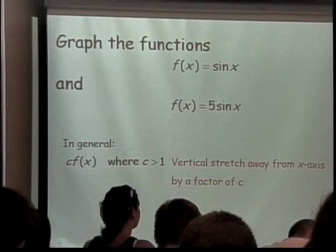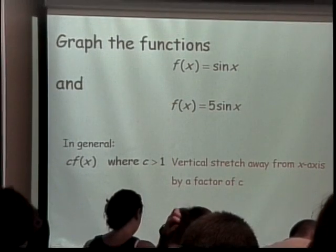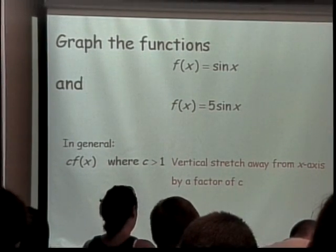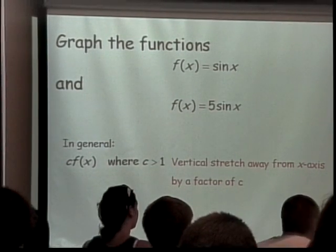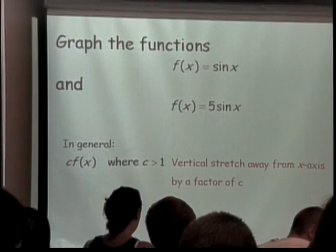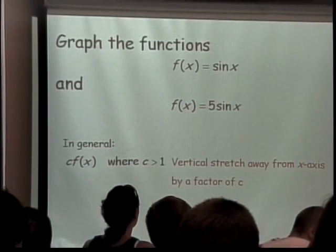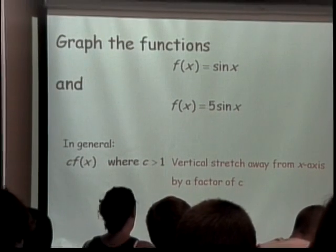Notice all the places on your graph where it ran into the x-axis, it still runs into the x-axis. But where your previous graph went only up to 1, your graph 5 times sine of x goes up to 5. So it's higher. Where your previous graph only went down to negative 1, you now go down to negative 5. So it's lower. It's gotten stretched out vertically.